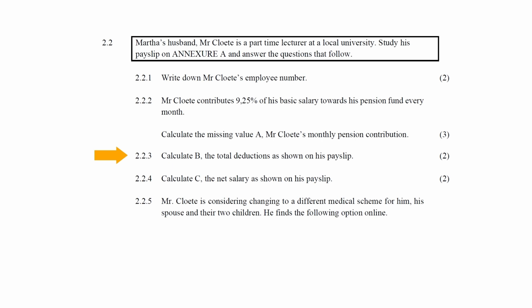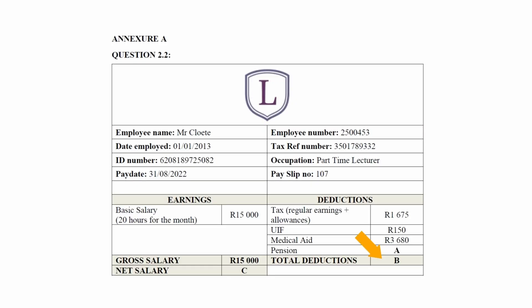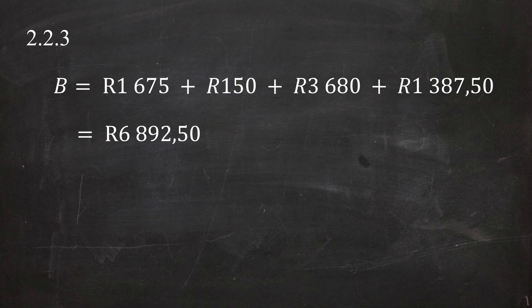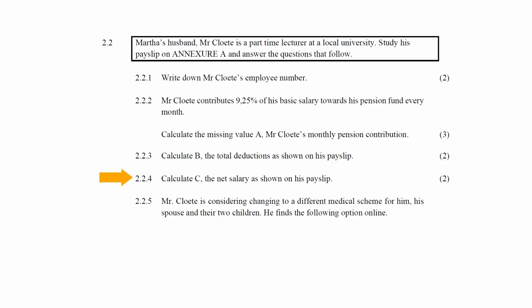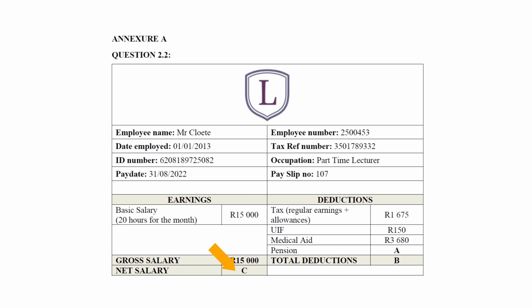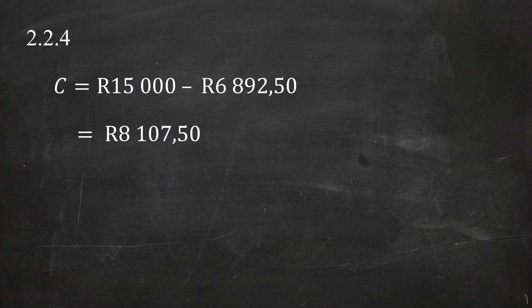In Question 2.2.3, you are instructed to calculate B, the total deductions as shown on the payslip. B equals the sum of the listed deduction values, giving a total deduction of R6,892.50. In Question 2.2.4, you are instructed to calculate C, the net salary. C equals the difference between the basic salary and the total deductions, giving a net salary of R8,107.50.